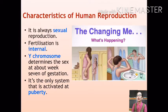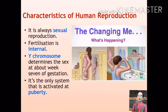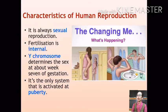Puberty involves two kinds of change. The primary change directly involves the development of testes and ovaries producing sperms and eggs respectively. Whereas the development of secondary sexual characteristics, such as enlargement of breasts in females, growth of pubic hair in both sexes, and many other distinguishing sexual characters, are considered secondary changes.